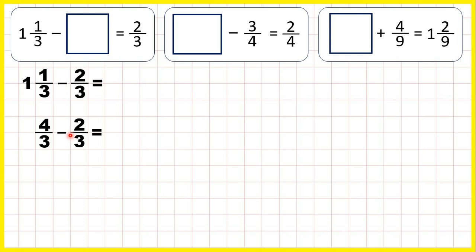That's four thirds because one times three is three plus one is four. So now we can subtract two thirds. Remember when we're subtracting fractions with a common denominator, the denominator stays the same in our answer and four minus two is two. So our missing fraction is two thirds.